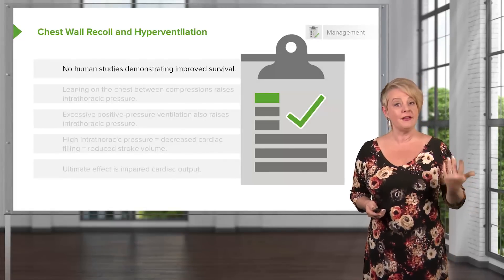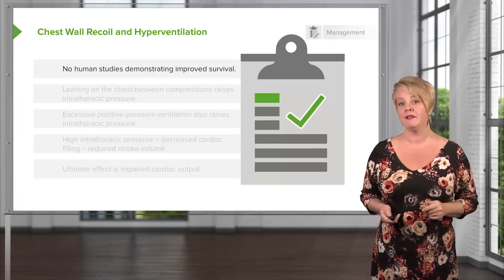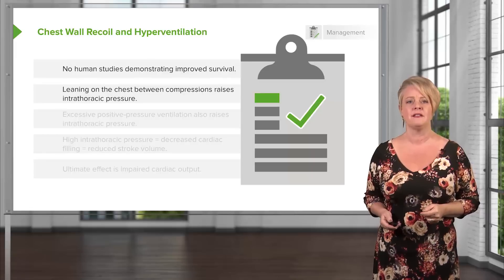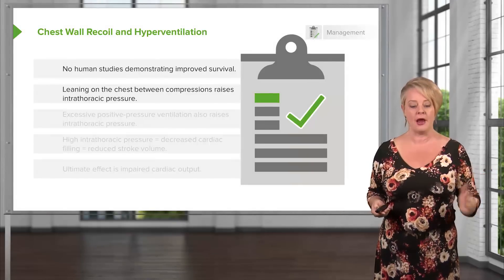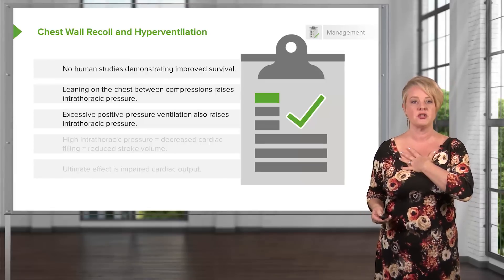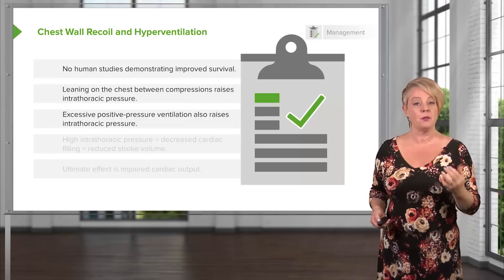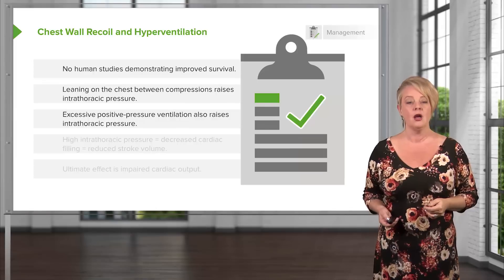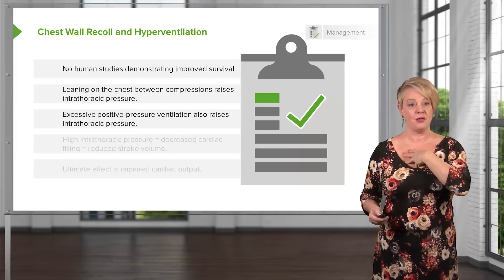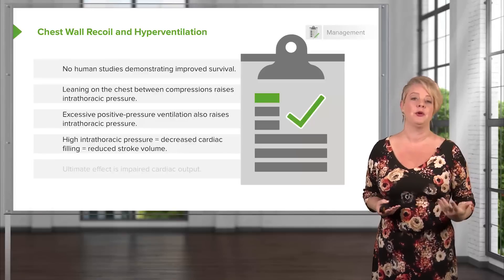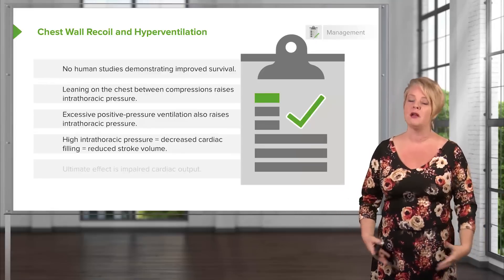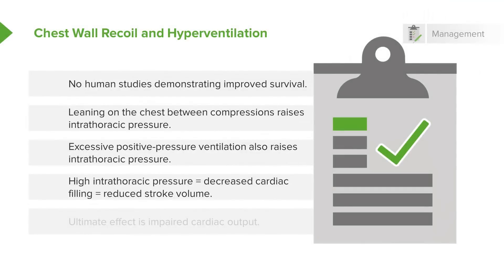Chest wall recoil is physiologically important, though there are no human studies demonstrating improved survival directly from it, since it's difficult to study. The idea is that if you lean on the chest between compressions, you increase the patient's intrathoracic pressure. Positive pressure ventilation also raises intrathoracic pressure. What brings blood back into the heart during diastole is negative intrathoracic pressure — that negative pressure gradient that pulls blood from the periphery back to the heart. So if you raise intrathoracic pressure and make it not negative, you prevent the heart from filling and decrease cardiac output by decreasing stroke volume.